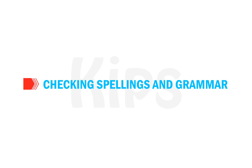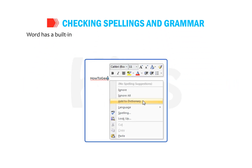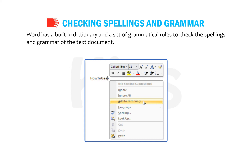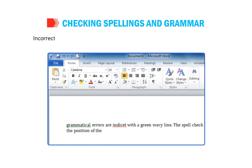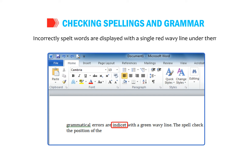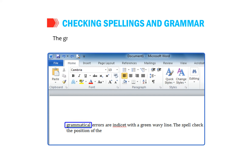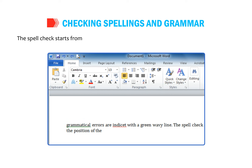Now let us talk about checking spelling and grammar. Word has a built-in dictionary and a set of grammatical rules to check the spelling and grammar of a text document. Incorrectly spelled words are displayed with a single red wavy line under them. Grammatical errors are indicated with a green wavy line. The spell check starts from the position of the cursor and checks the complete document.